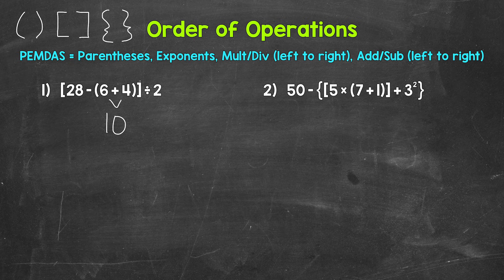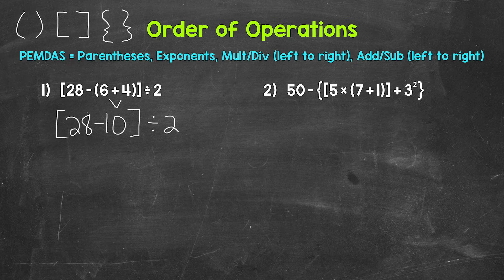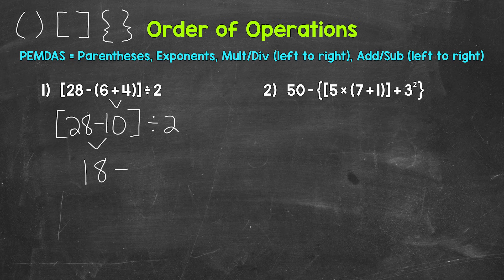6 plus 4 is 10. Now we need to bring down everything we did not use. So we have 28 minus 10 in brackets, divided by 2. Do we have any parentheses or other grouping symbols? Yes, we have brackets. So we have 28 minus 10 within those brackets. 28 minus 10 is 18, so we have 18 divided by 2, and we bring down everything we did not use. 18 divided by 2 is 9, and this is our final answer.